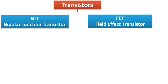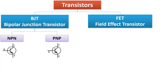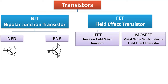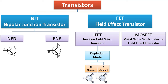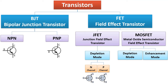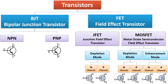BJT is divided into two groups: NPN and PNP. Their symbols are as shown here. FETs are divided into two groups: JFET and MOSFET. While JFETs are produced in two types — N-channel and P-channel — only as depletion mode, MOSFETs are of two types: depletion and enhancement mode, each produced in N-channel and P-channel variants.